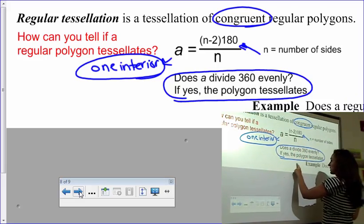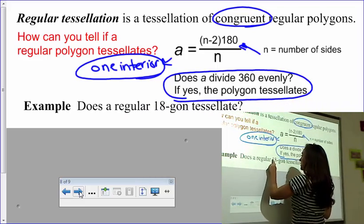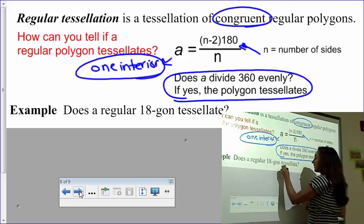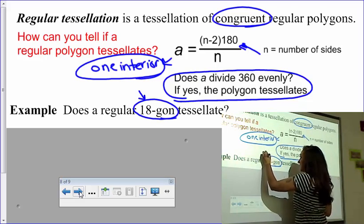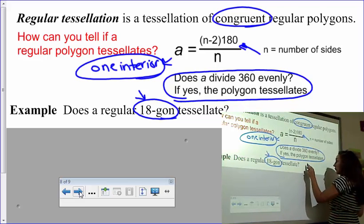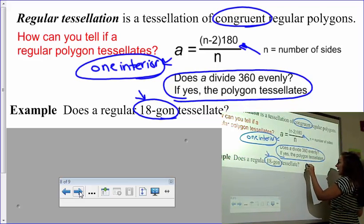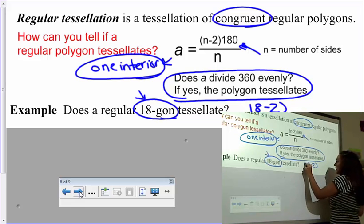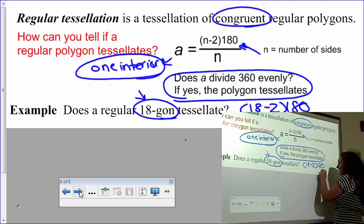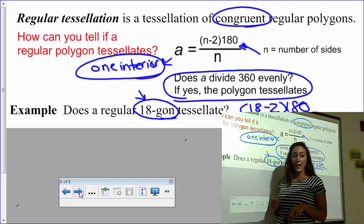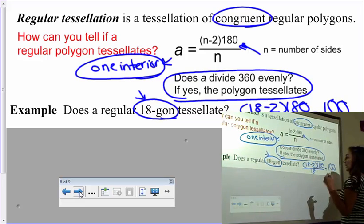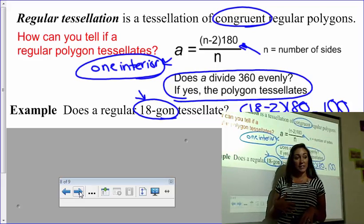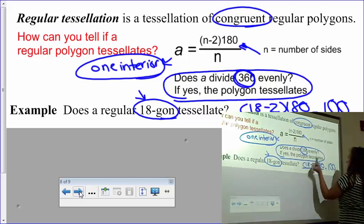The reason being with that is because, remember, we have no gaps, we have no overlaps. So they have to fit together in a 360 degree circle, each angle. Let's just do one example together first, using this formula. And it says, does a regular 18-gon? How many sides does an 18-gon have? Because it's 18. We're going to plug that into our formula, where it says n minus 2. So 18 minus 2 times 180, and we're going to divide that by 18. Go ahead and do your algebra.